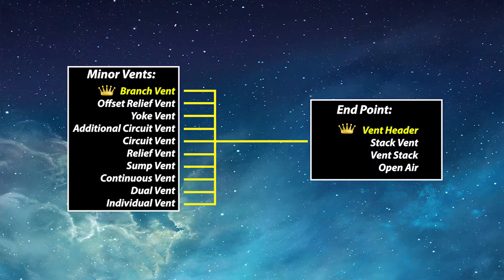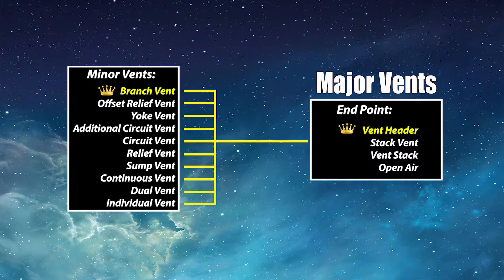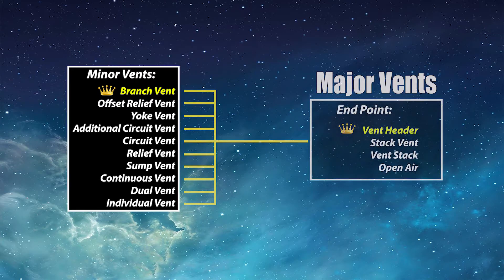Now you may have noticed that the three vents mentioned in our endpoint are not on the minor vents list. This is our major vents: vent header, stack vent, and vent stack. And you'll notice I put the crown beside vent header. That is the king of our vents. You'll have to wait till the next video to see what this is all about though.